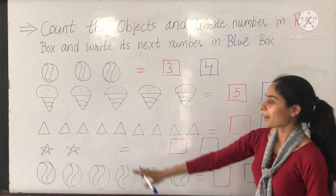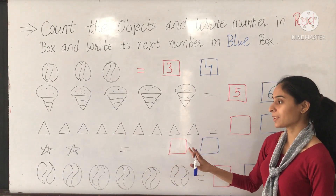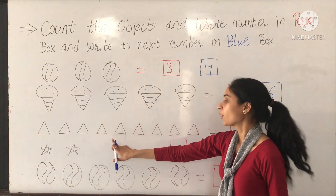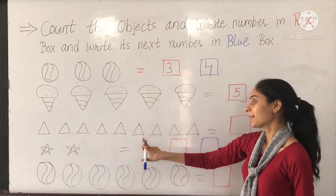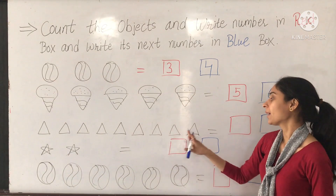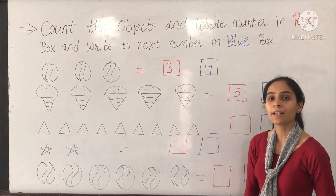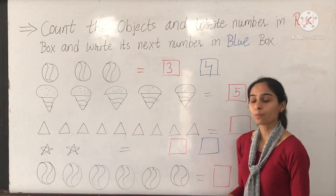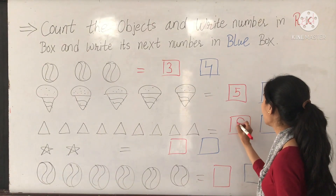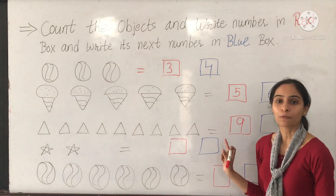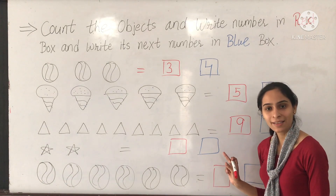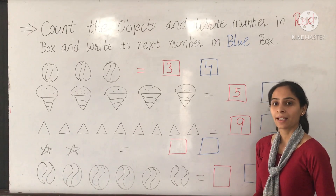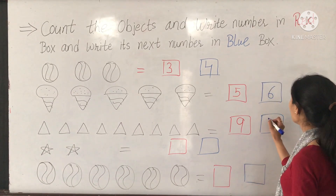Next — triangles. Count it: 1, 2, 3, 4, 5, 6, 7, 8, 9. How many triangles? 9. So we can write 9 in the red box. What comes after 9? 10. Write 10 in the blue box.